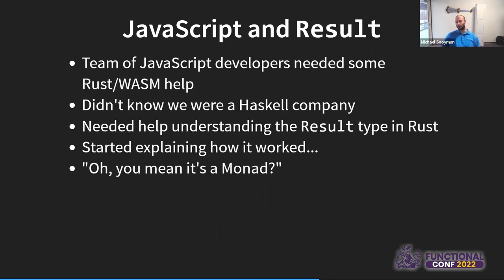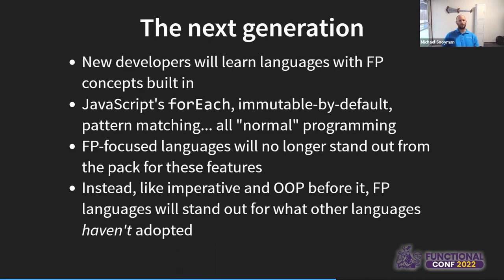So we can definitely see the influence of FP has gone deep into industry. We're going to have a next generation of programmers who are learning languages where functional programming concepts are built in from the beginning. Unlike myself and others of my generation who started with imperative or object-oriented programming and then had to learn functional programming concepts, people today learning JavaScript are learning about map right from the beginning. Even Java and C++ programmers are learning these things from the get-go: immutable-by-default coding standards, pattern matching — all of this is considered normal programming, not some weird FP thing.